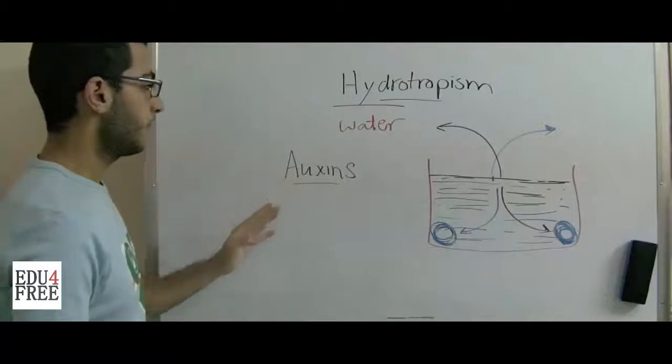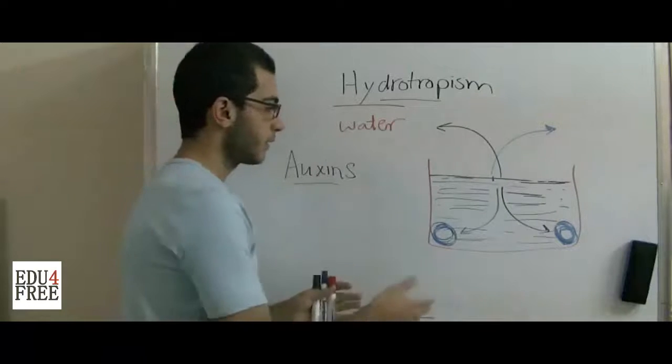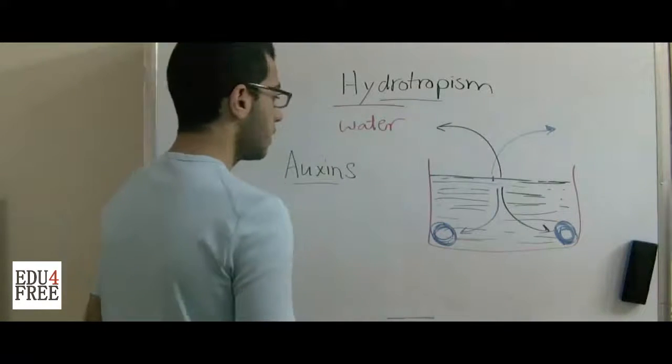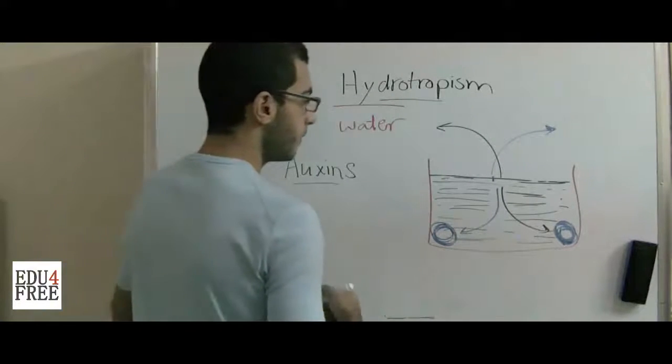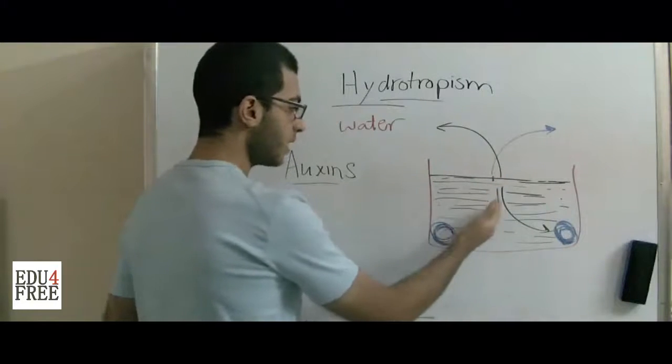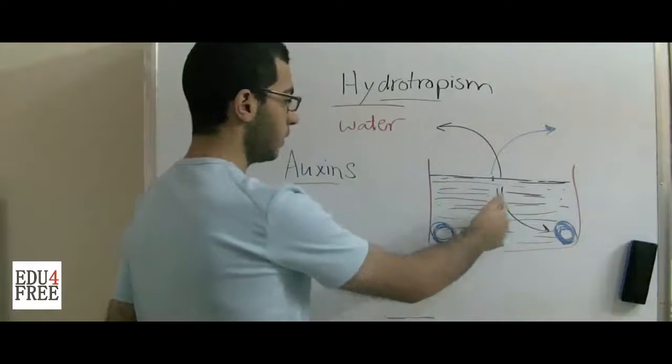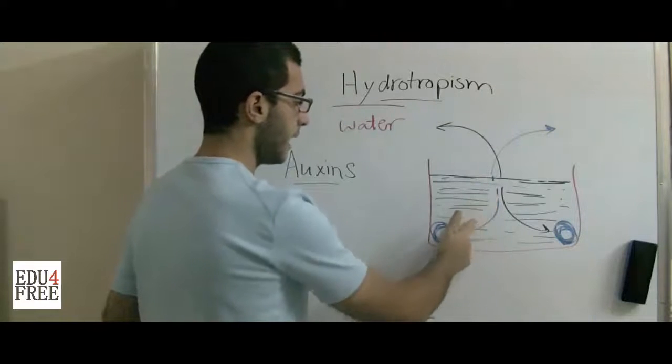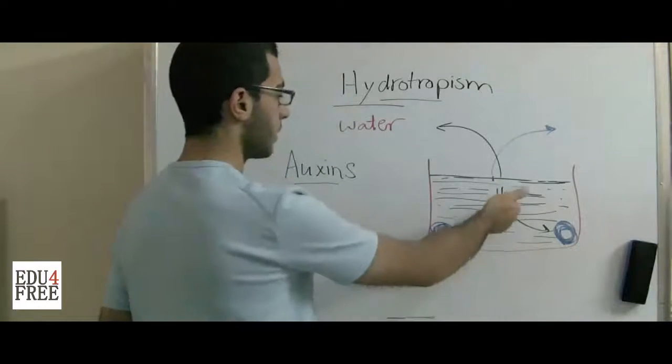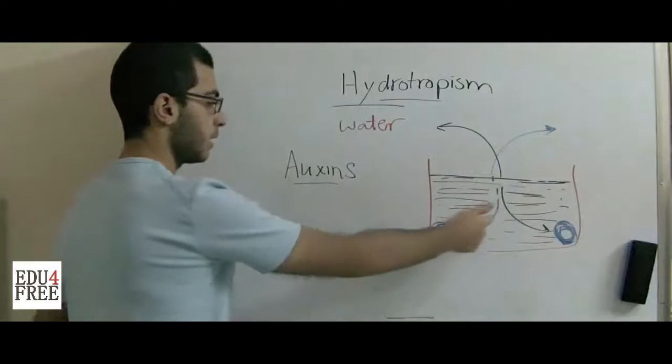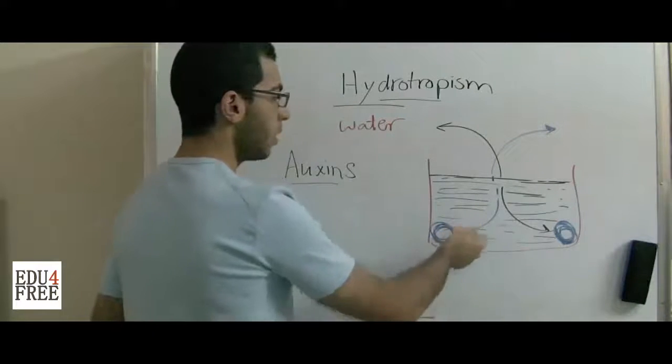So the auxins affect the way of the growth of the plant. So the accumulation of auxins in the roots inhibit the growth of this side and elongate the other side so that the curvature takes this shape.